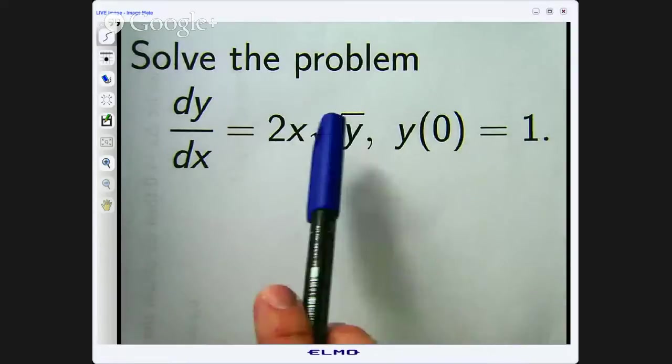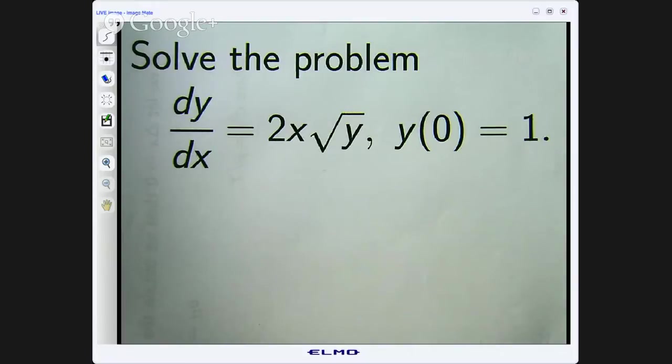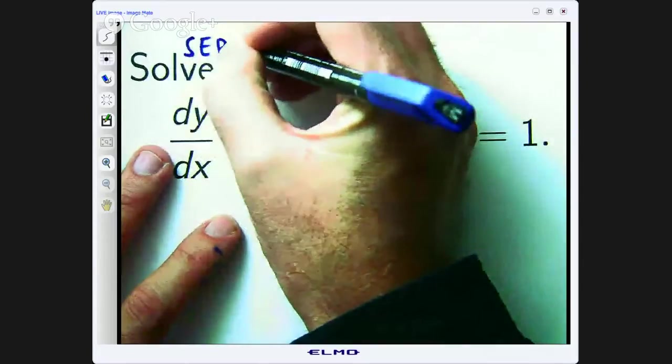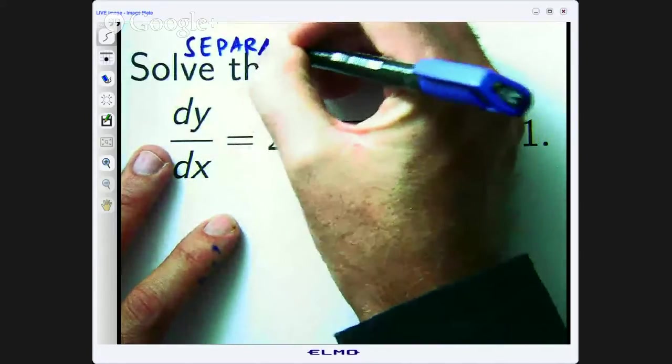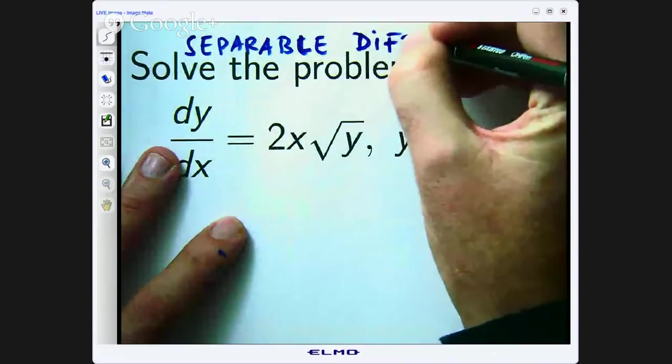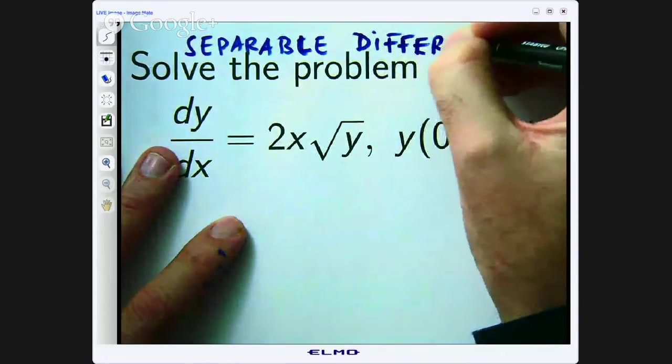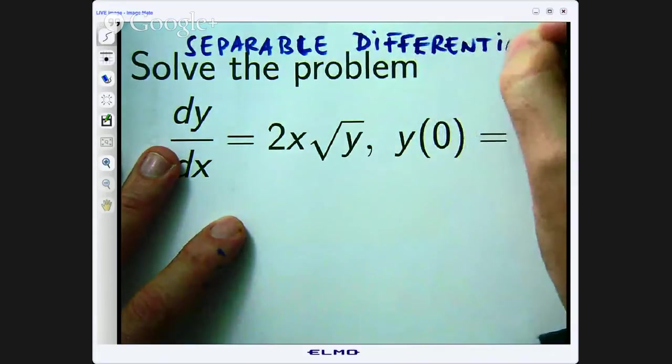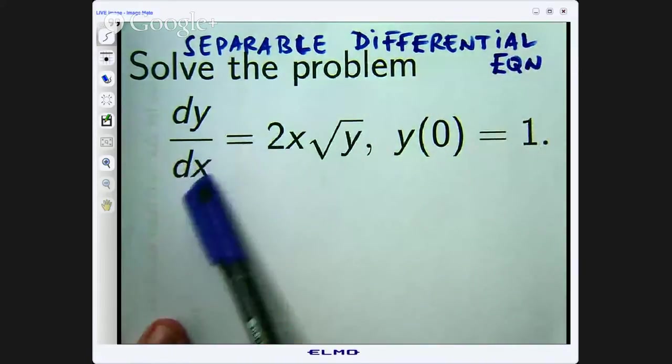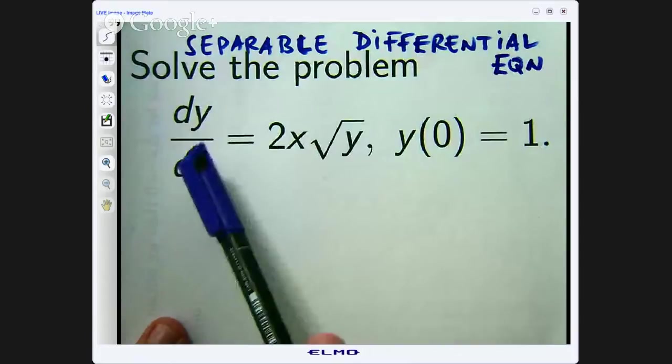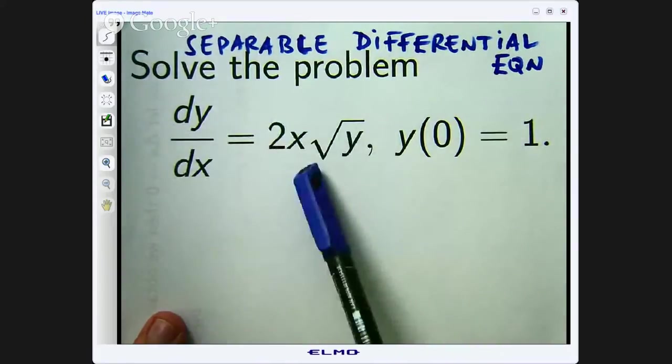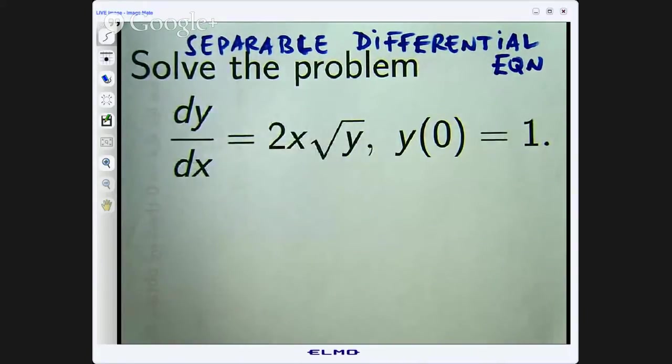Alright so let us have a look at this particular problem. Now this is a special kind of problem called a separable differential equation. A differential equation is just an equation with an equal sign that has the derivative of some unknown function y in it and what you want to do is come up with the function y that depends on x that satisfies this particular problem.